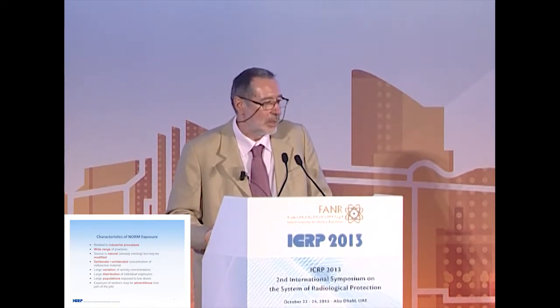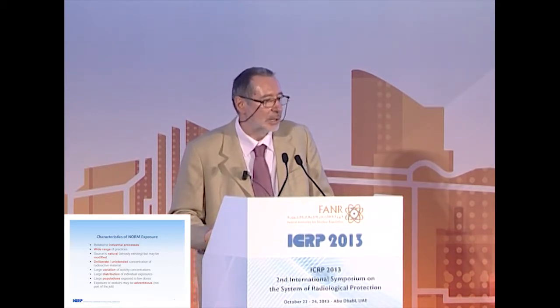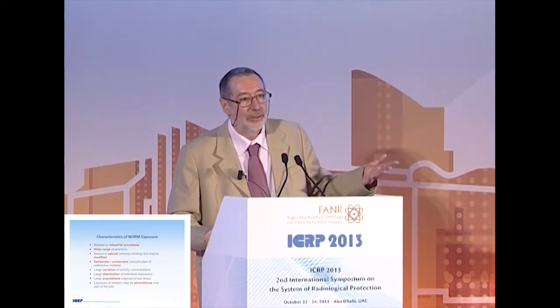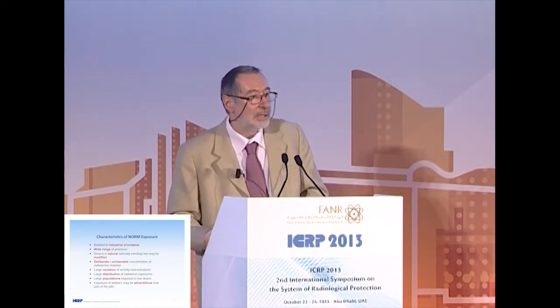The characteristics of NORM exposure — as you have heard — are related to industrial processes, not always big industry, but generally professional activities. We have a wide range of practices. The source at the beginning is a natural source, and it already exists, which means it is not always as controllable as artificial sources. But sometimes it is modified, and then we can better control it. The concentration of radioactive material may be deliberate or unintended — that is another characteristic. We have a large variation in activity concentration and a large variation in distribution of exposure.